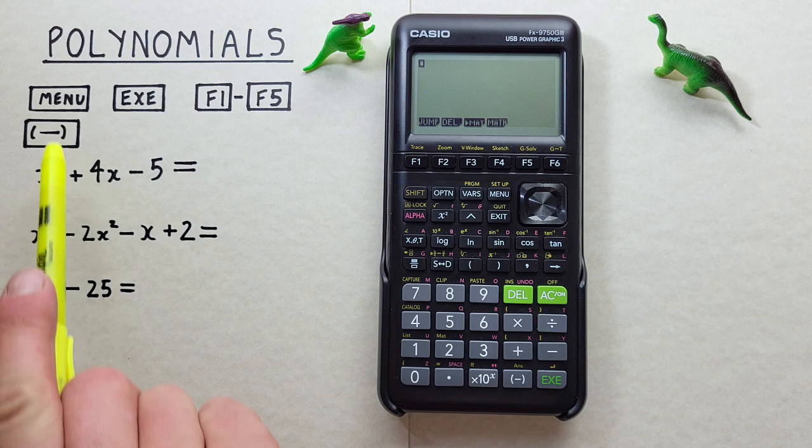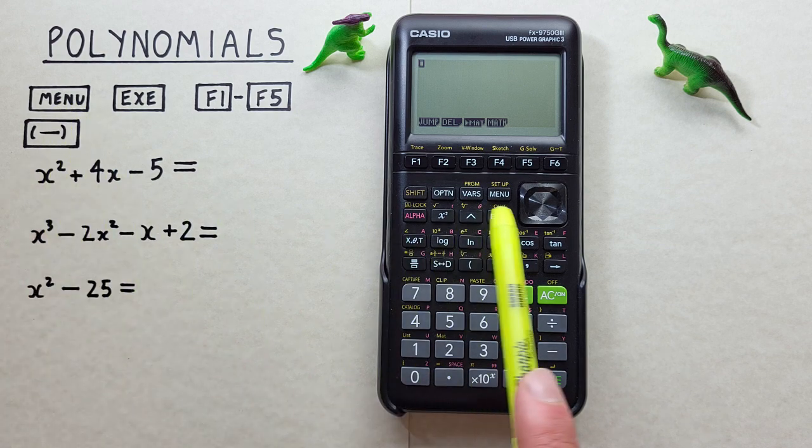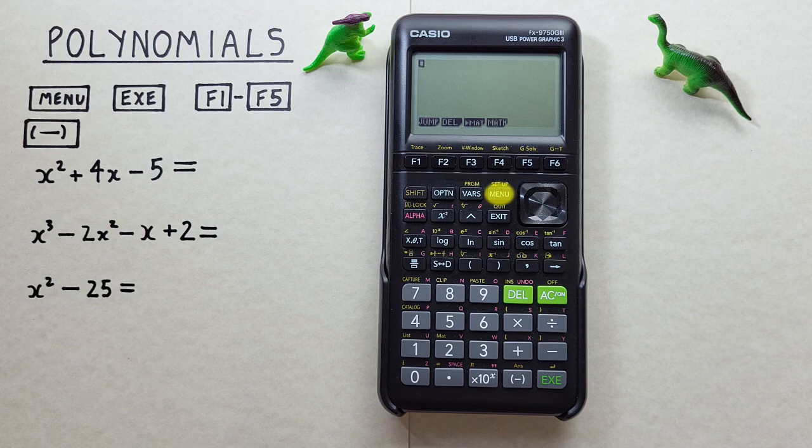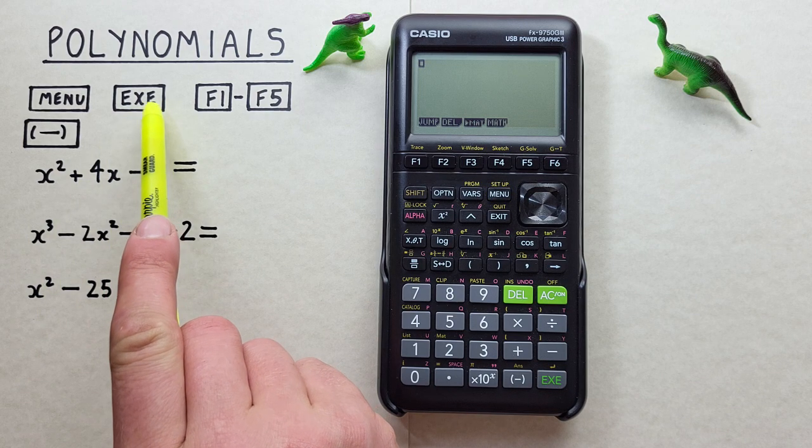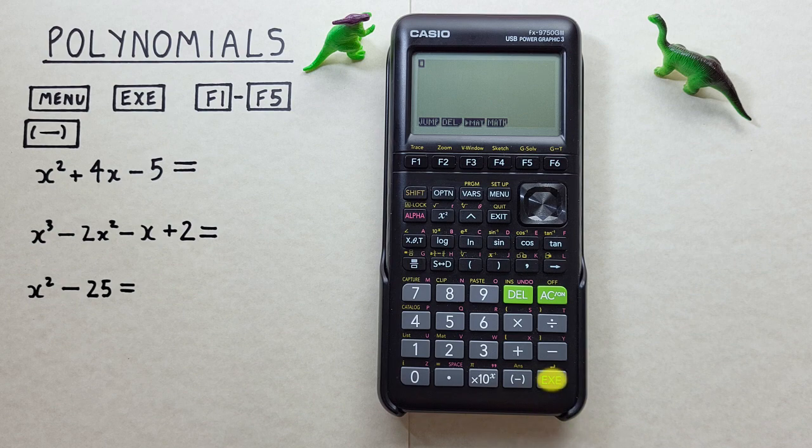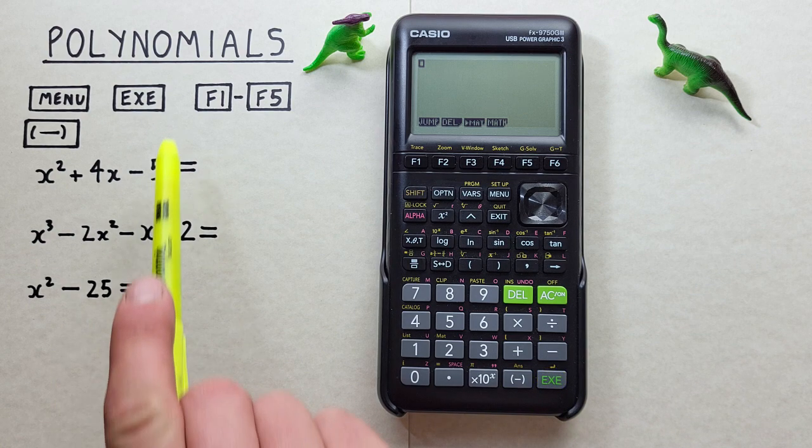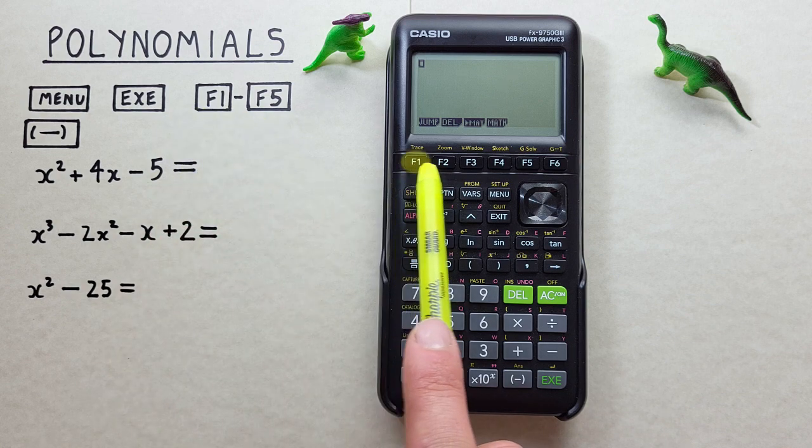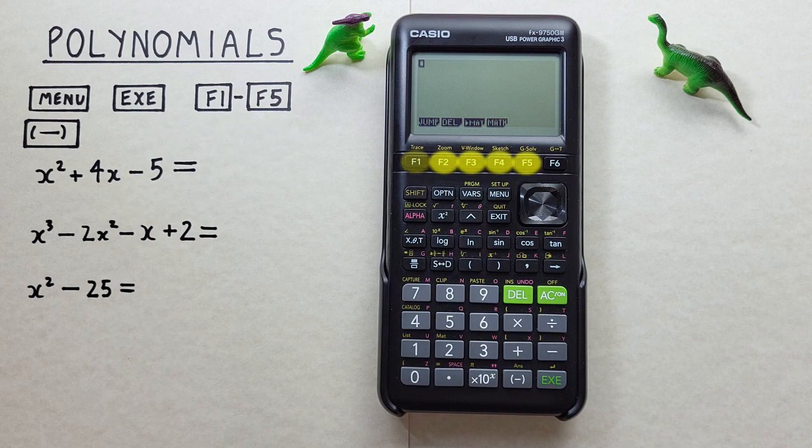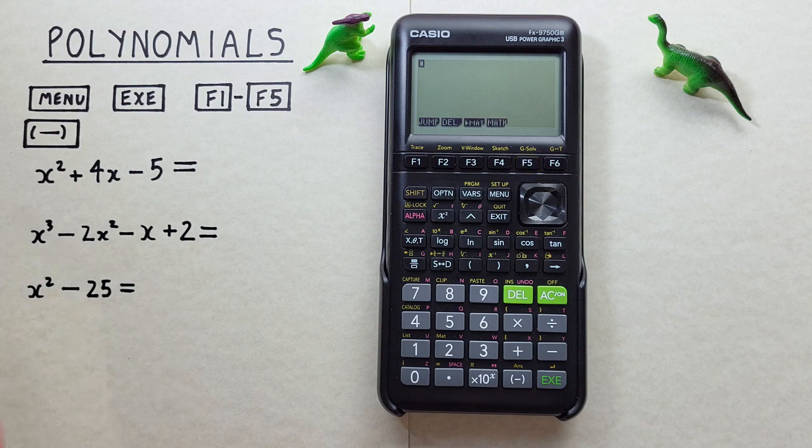To do this we'll use the menu key that looks like this located here, the EXE or execute key that looks like this located here, the F1 to F5 keys that look like this located across the top here, and the negative key that looks like this located down here.